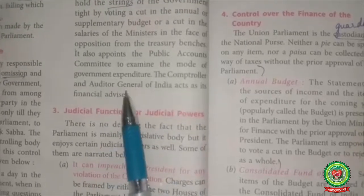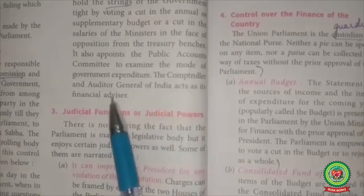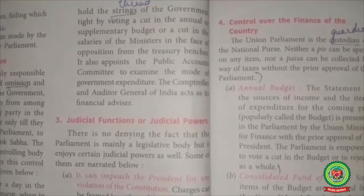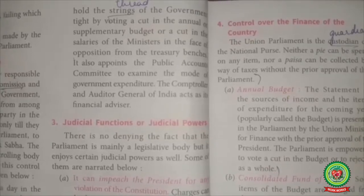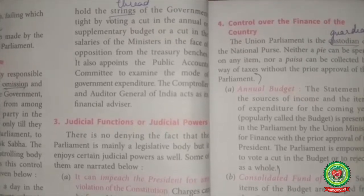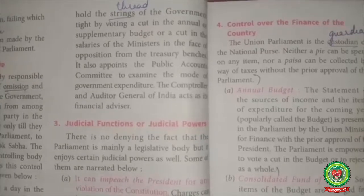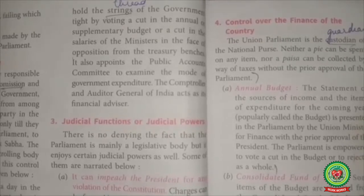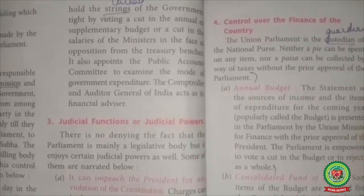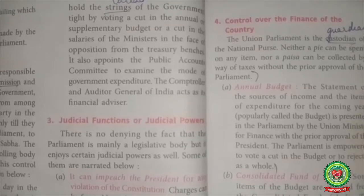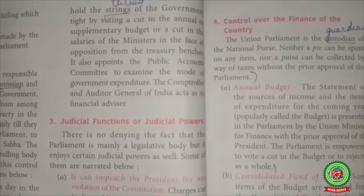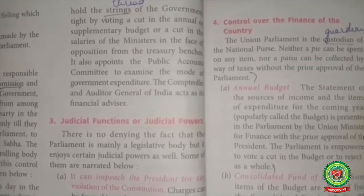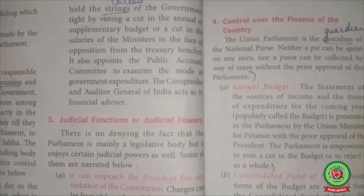The Comptroller and Auditor General of India acts as Parliament's financial advisor. Parliament must grant money to the executive for expenditure and vote the taxes, but it also has to see that appropriations for funds are spent on approved items in a wise and economical manner. To ensure proper expenditure and receipts, Parliament provides for accounting and audit. The office of the Comptroller and Auditor General has been set up for this purpose. Parliament has also set up the Public Accounts Committee, the Estimates Committee, and the Committee on Public Undertakings.